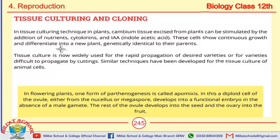In tissue culturing, cambium tissues are cut from the plant, and nutrients and cytokinins are added. These cells then grow continuously and are sub-cultured to produce new genetically identical plants.